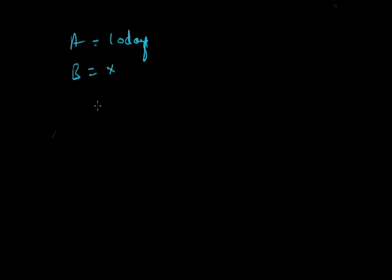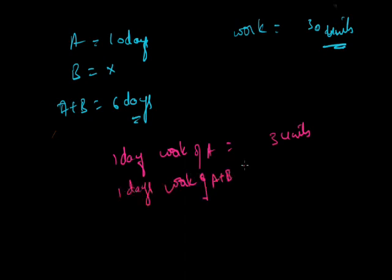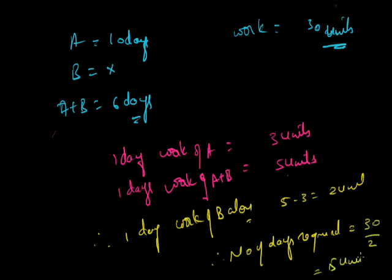The third way is the total work method. A has 10 days, B is unknown, and A plus B together take 6 days. The LCM of 10 and 6 is 30, so total work is 30 units. One day work of A is 30/10 = 3 units. One day work of A and B combined is 30/6 = 5 units. Therefore, one day work of B alone is 5 minus 3 = 2 units. Number of days required for B = 30/2 = 15 days.